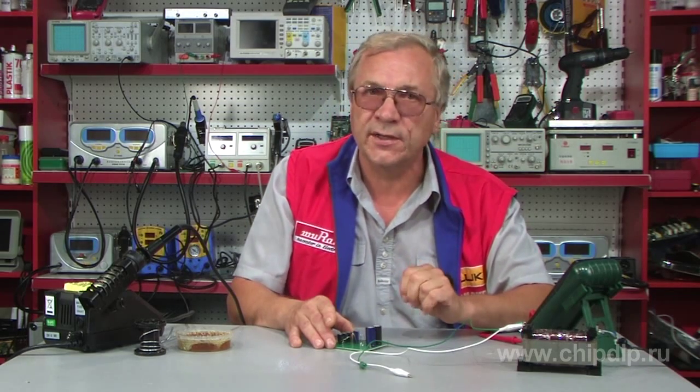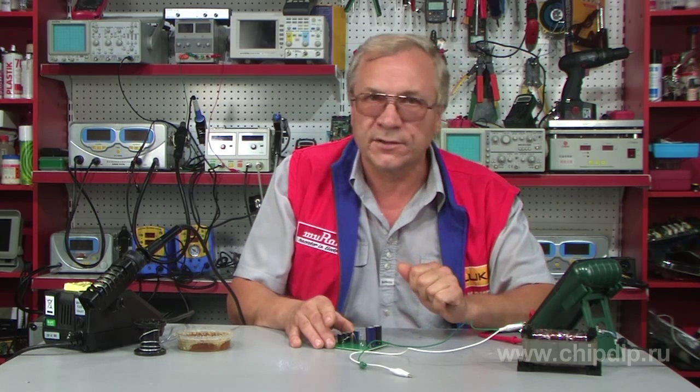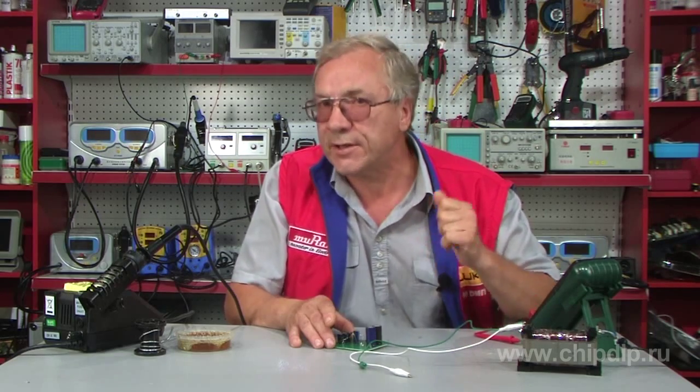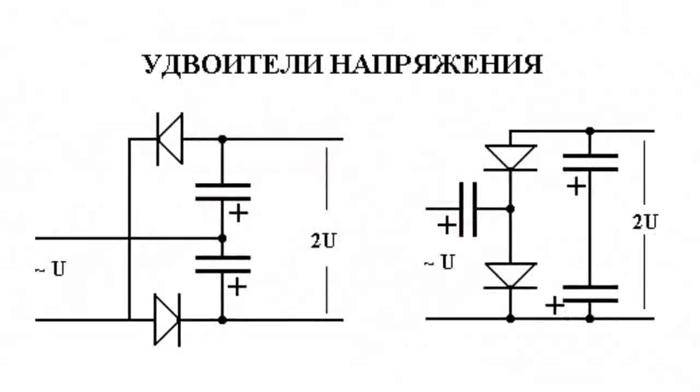Let's consider two simple schemes of multipliers: the circuit of a symmetric voltage doubler and the asymmetric circuit with triple voltage conversion. So here is a simple scheme of a symmetric voltage doubler.